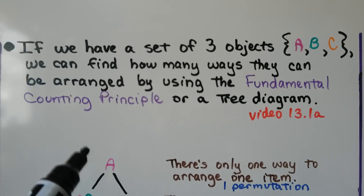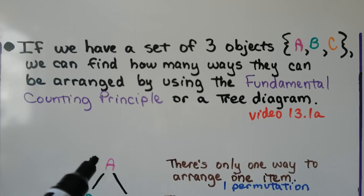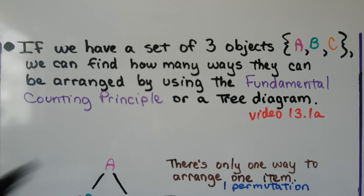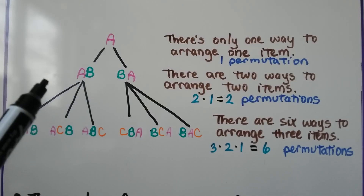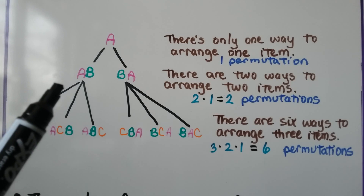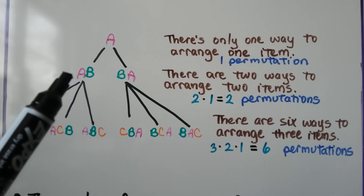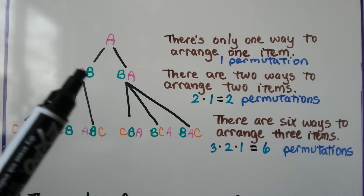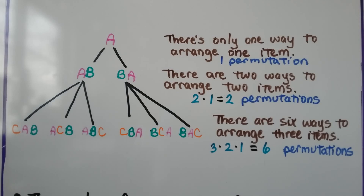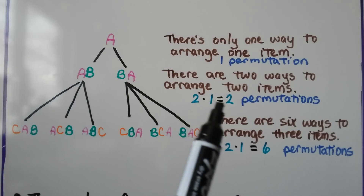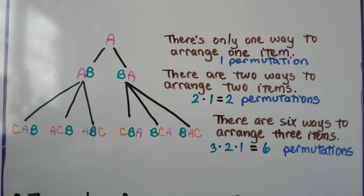If we only had one thing in the set — an A — there's only one way to arrange one item, so that would be one permutation. But there are two ways to arrange two items. For A and B, we could put the A first and then the B, or we could put the B first and then the A. That's two times one, which equals two permutations.